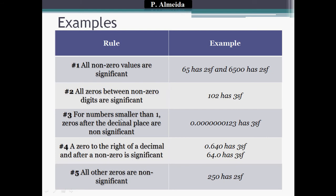Rule number three — for numbers smaller than one, zeros after the decimal place are non-significant. So here I have 0.000000123. This number has three significant figures. It does not matter how many zeros I put after the decimal place — they do not count because the number is smaller than one. So it has three significant figures: 1, 2, 3.